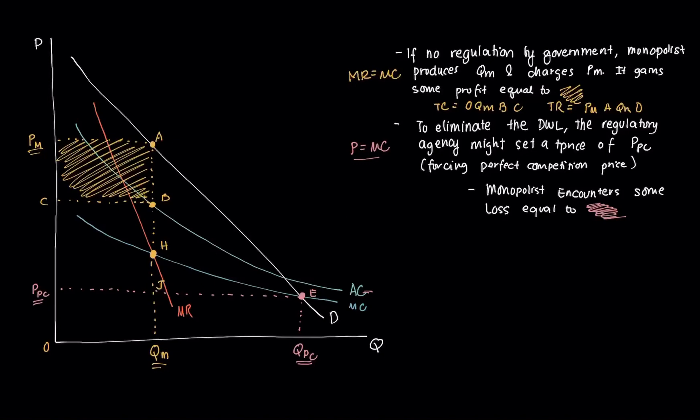That loss looks something like this, I'll just draw it here. It's essentially this shaded area here. That's the loss of the monopolist under this scenario.